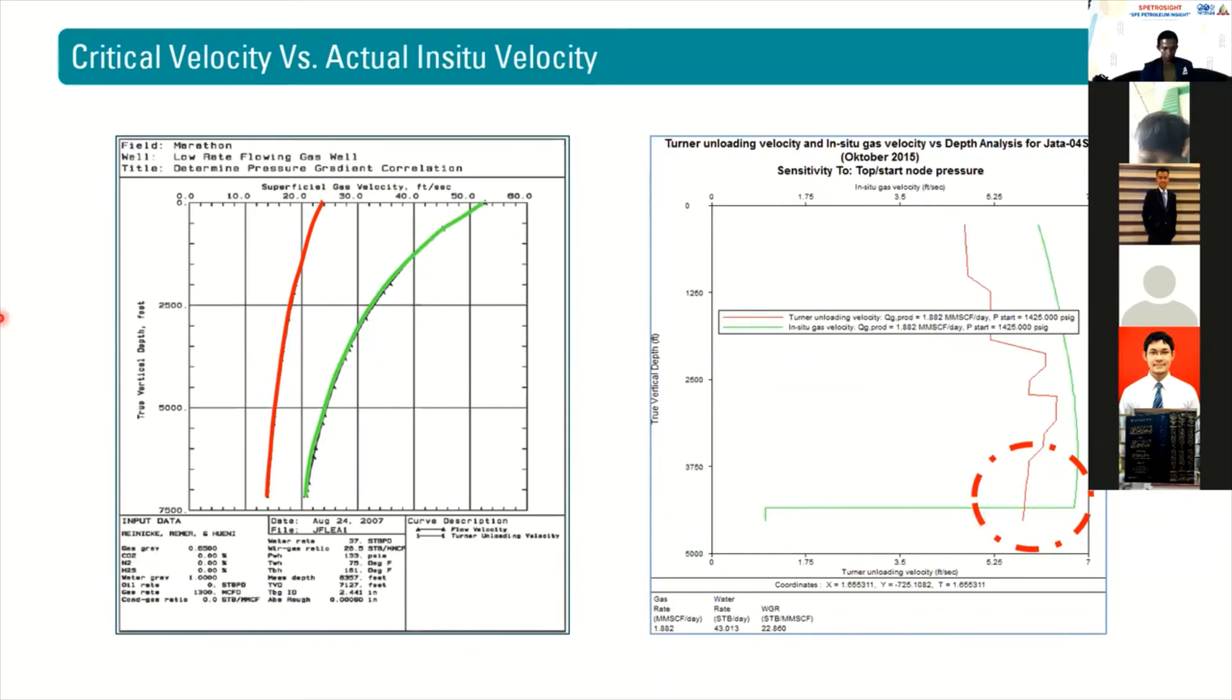Like this one, the red line is the critical flow rate and the in-situ flow rate. On the left profile, we see that our actual in-situ velocity or flow rate is higher than the required critical rate, so it's healthy.